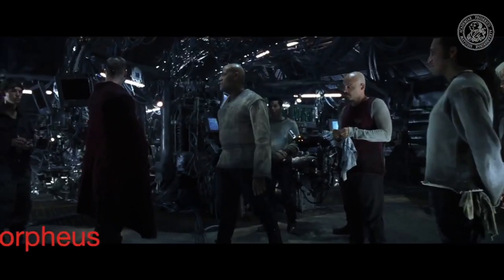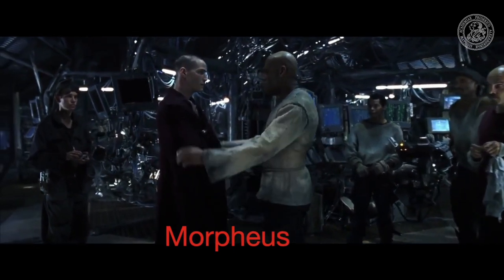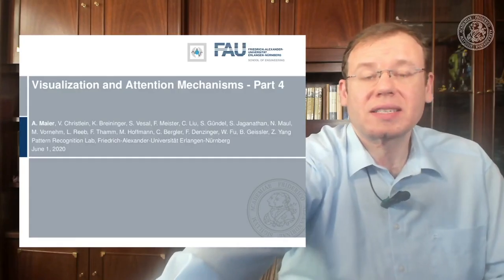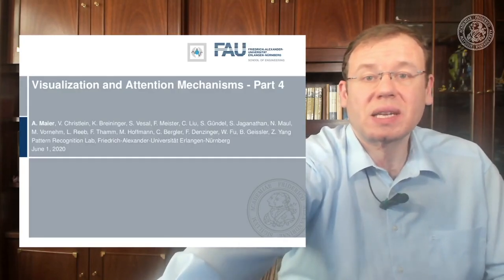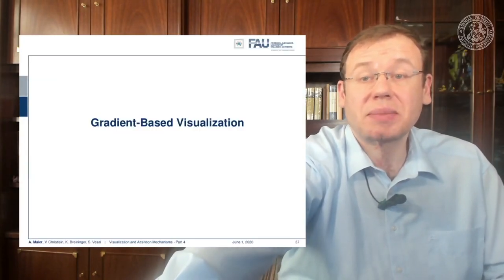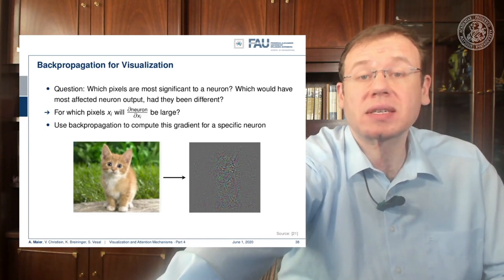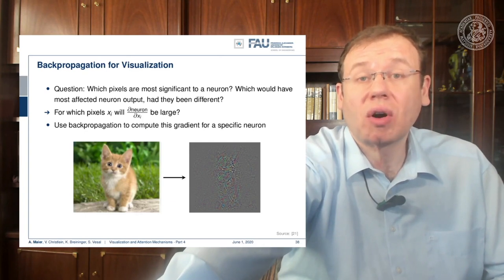Welcome back to deep learning. Today we want to look a bit more into visualization techniques, and in particular the gradient-based and optimization-based procedures. Let's talk first about gradient-based visualizations. The idea is that we want to figure out which input pixel is most significant to a neuron and if we would change it, what would cause a large variation in the actual output of our neural network.